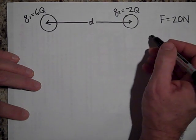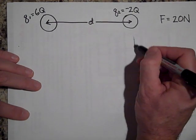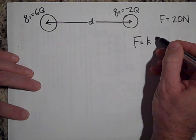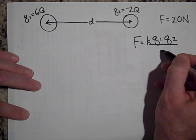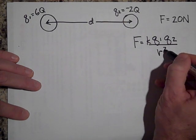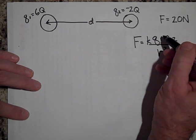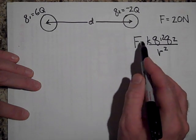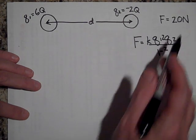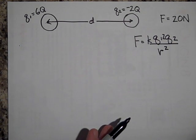Okay, by doubling 2Q, if we look at the Coulomb's law formula, by doubling the one charge, by putting a 2 there, that makes this force twice as big. So that would be 40 Newtons.